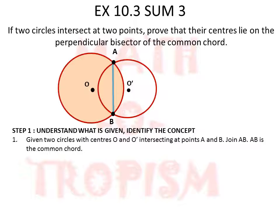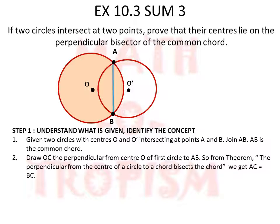We need to prove that the centers lie on the perpendicular bisector of the common chord, using concepts we have already learned. We draw a perpendicular OC to AB. From the theorem that the perpendicular from the center to a chord bisects the chord, we get AC is equal to BC.